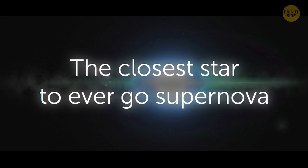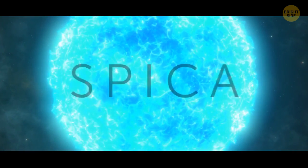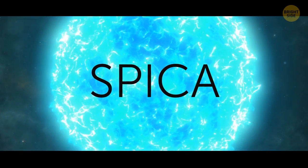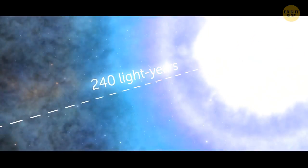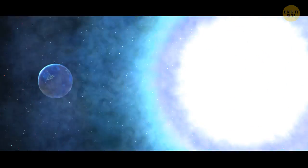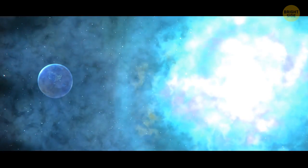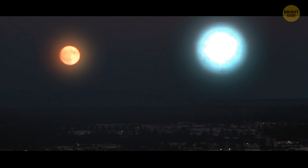The closest star to ever go supernova. Within a few million years, the Spica star, which is only 240 light-years from us, will burst into a supernova. Supernovae are a problem for life when they're three times closer than that. But the supernova itself will shine in the Earth's skies as bright as a full moon.